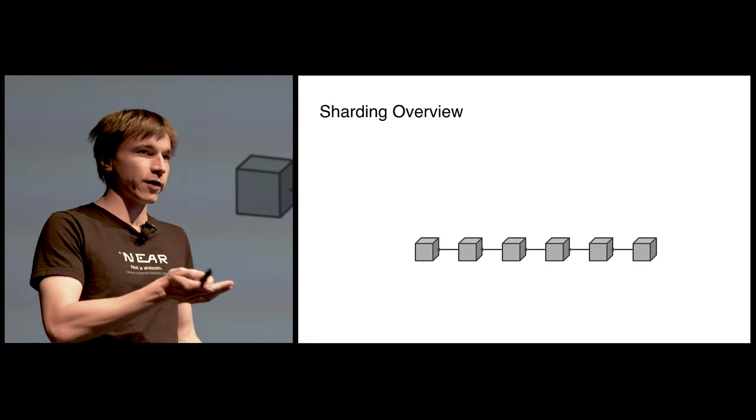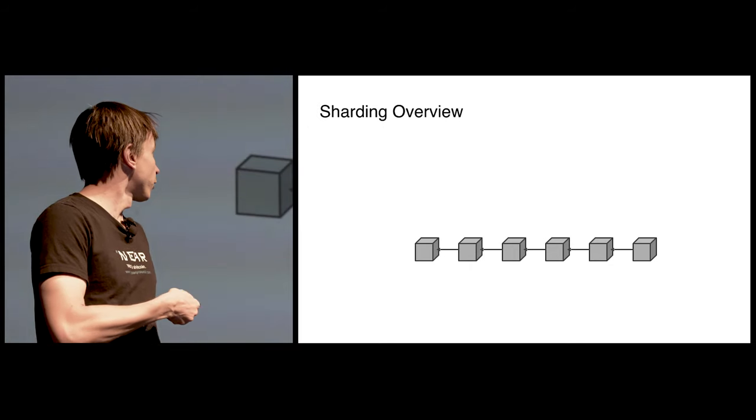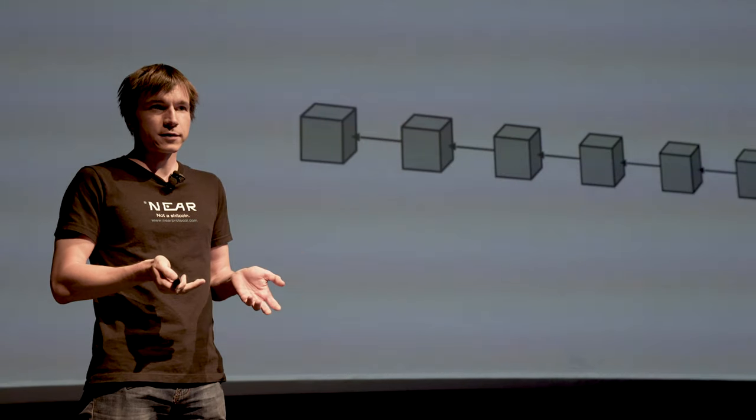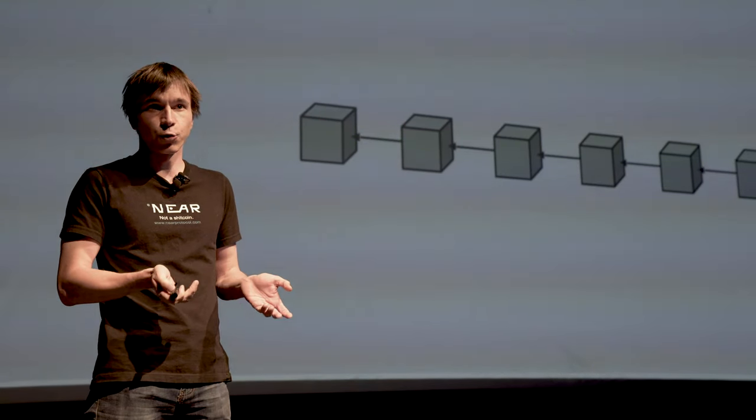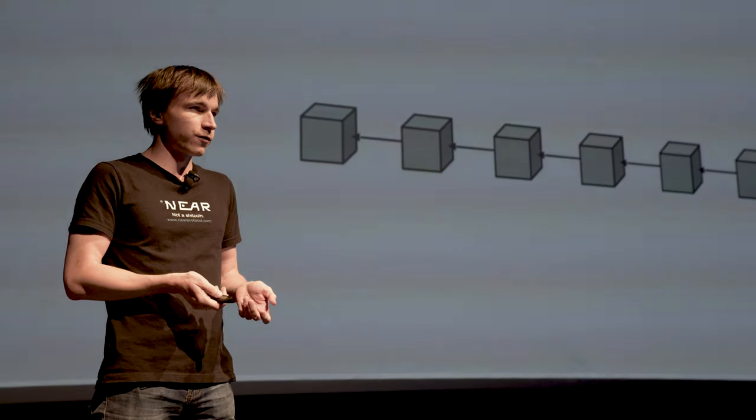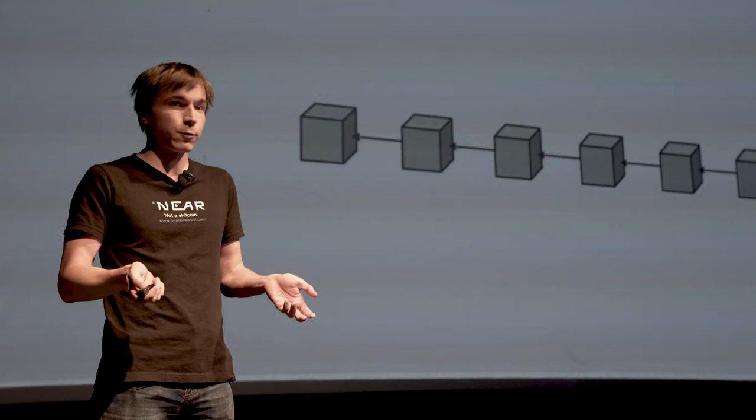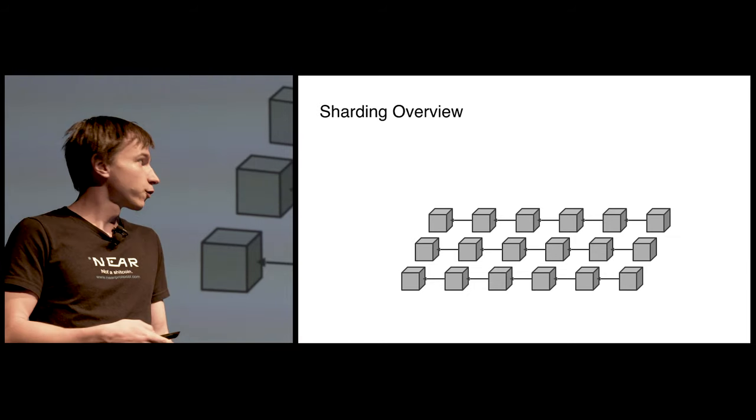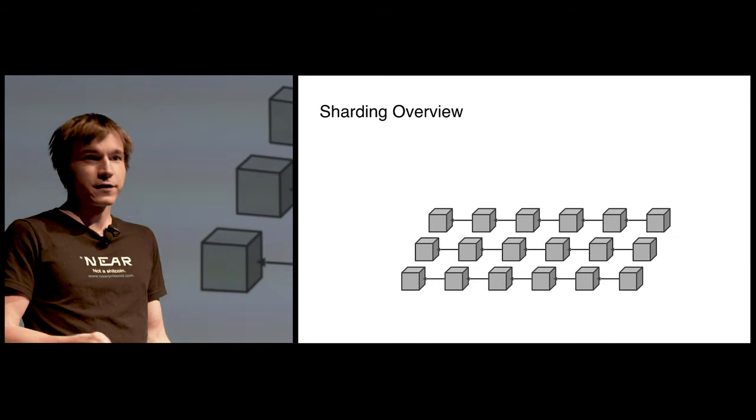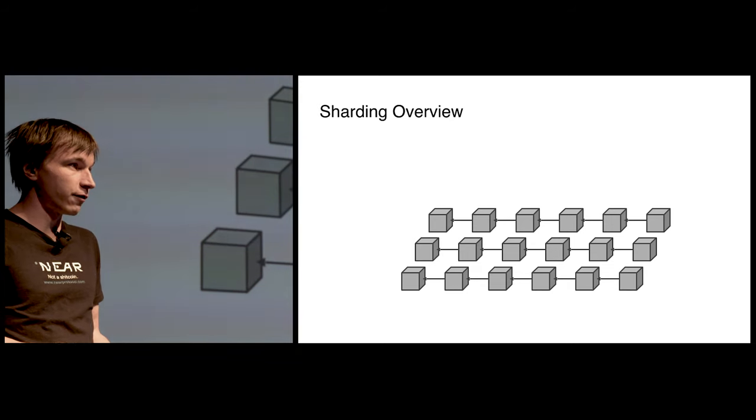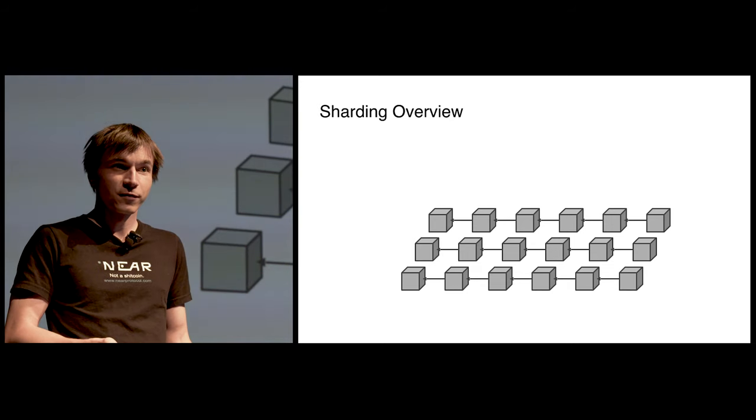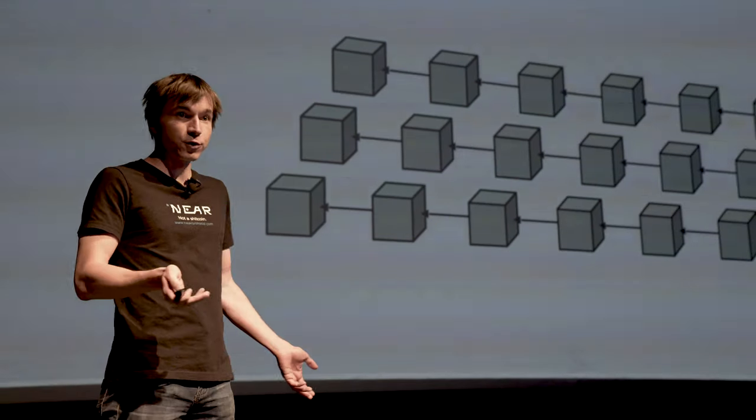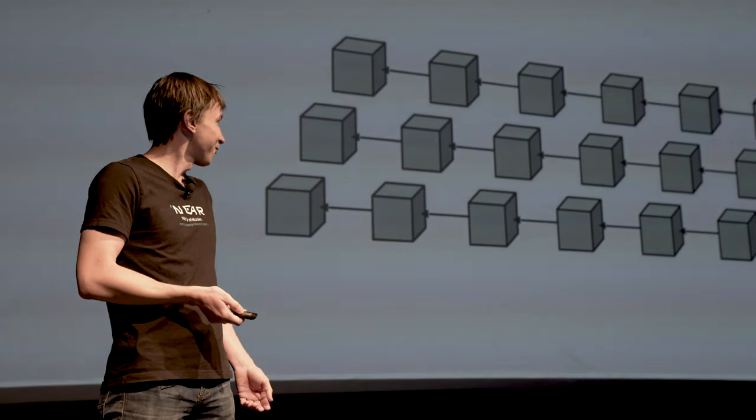So first of all, what sharding is, right? Let's say we have a blockchain, that could be Ethereum or Bitcoin or any blockchain. That blockchain has some number of transactions per second it can process. Let's say it's 12. And let's say 12 is not enough. Maybe we want 36. So one thing we can do is we can run three blockchains. If each of them can process 12 transactions, that gives us 36. If we want 1,000 transactions per second, we can run 100 blockchains. And if we want 10,000 transactions per second, we can run 1,000 blockchains. And that's it. We solved the scalability. Problem solved.